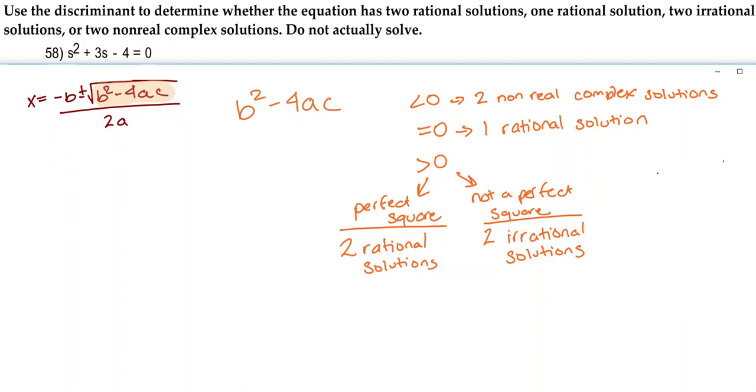So this is in the form ax squared plus bx plus c. So our a here is 1, our b is 3, and our c is negative 4. So when we plug that into our discriminant, we get 3 squared minus 4 times 1 times negative 4.